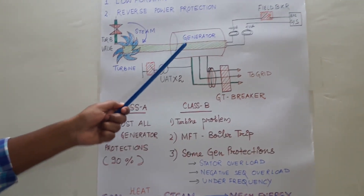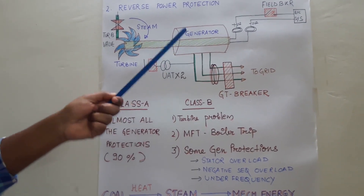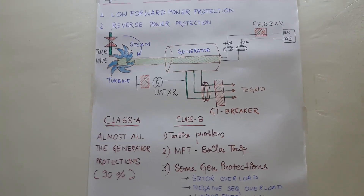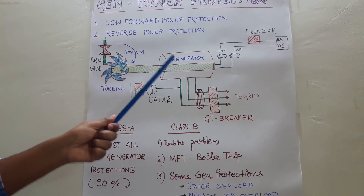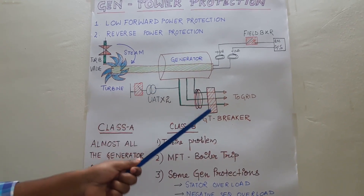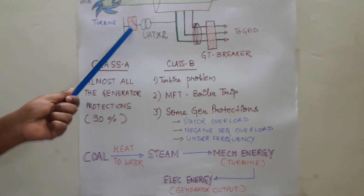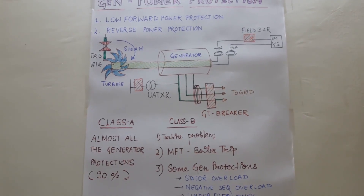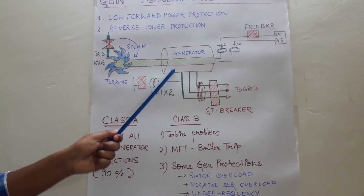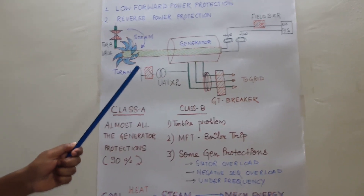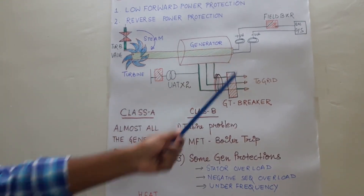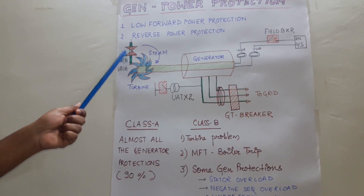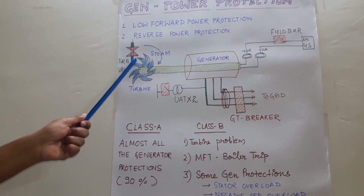So what is meant by generator tripping? Generator tripping is also known as class A tripping, because very rare protections are of class B type. To trip the generator means we are tripping the GT breaker, the two UAT breakers, and the field circuit breaker. Almost 90% of generator protections use this kind of class A tripping, where all three types of breakers are tripped instantly and also the steam valve gets closed at the same time.